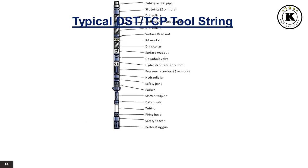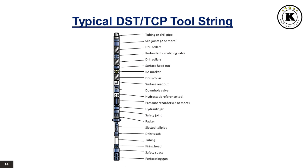Typical DST TCP Tool String. A typical DST TCP Tool String is composed, from bottom to top, of: perforating gun, safety spacer, firing head, tubing, debris sub, slotted tailpipe, packer, safety joint, hydraulic jar, pressure recorders, hydrostatic reference tool, downhole valve, surface readout, drill collars, radioactive marker sub, surface readout, drill collars, redundant circulating valve, drill collars, slip joints, and finally tubing or drill pipes.